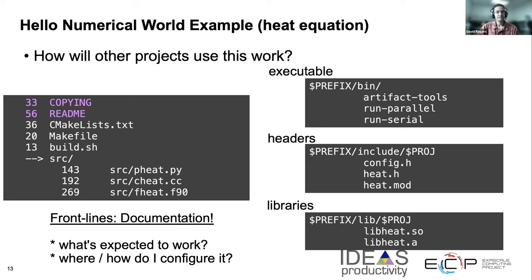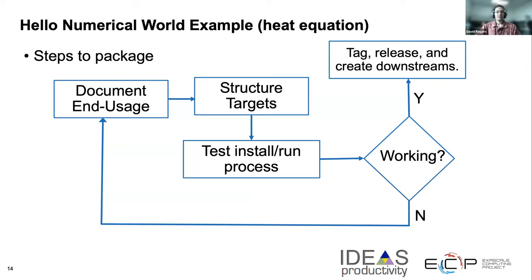The front lines of this are documentation — I should explain what each thing does so users know, for example, 'I include heat.h and I link with libheat.so and now I can use all this cool functionality.' As a general workflow, I'll first document what end users are expected to do, then structure what targets — the libraries and executables — I'm going to install into the system, then test the install-run process. If it's working, we can do the tag release, create downstream dependencies, and work with users. If not, we go back to documentation.